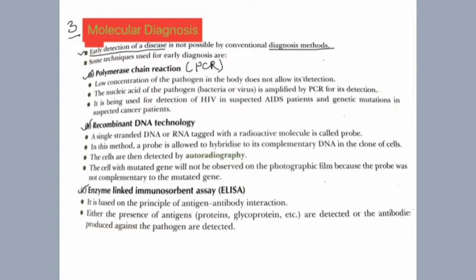If someone has a virus, pathogen, or bacteria that enters the body, it will hijack the cell mechanism and then multiply. It will start to increase in number. Then the symptoms will increase. When the number increases to an adequate amount, the symptoms will start appearing.